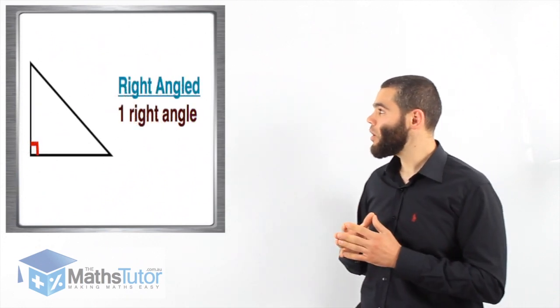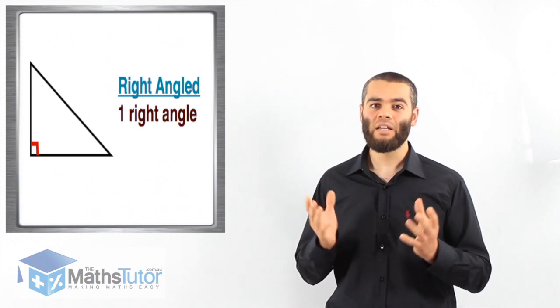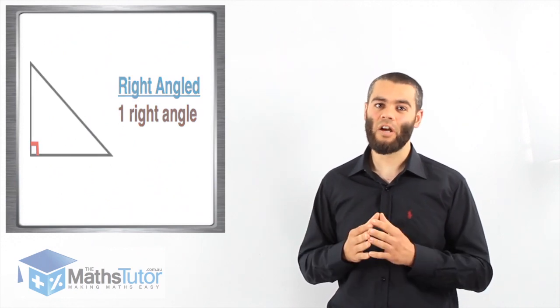Then we have what we know as the right angle triangle. Very easy. Right angle triangle means it has a right angle made of 90 degrees.